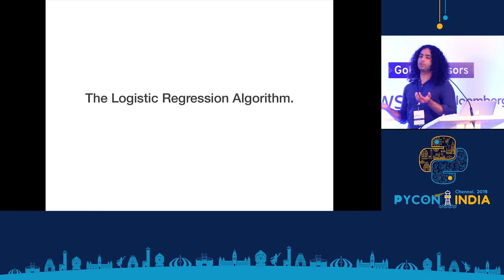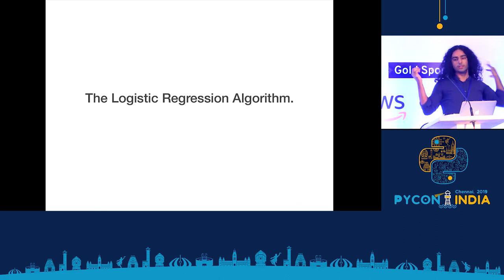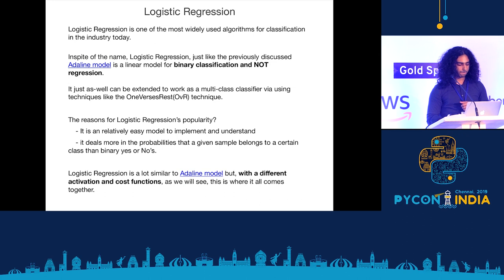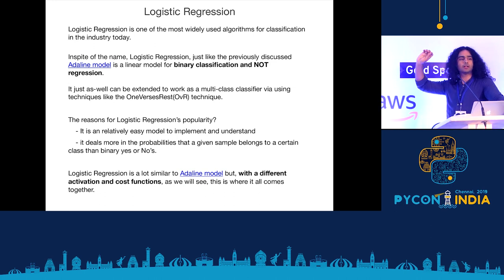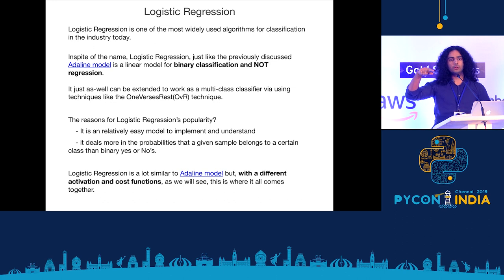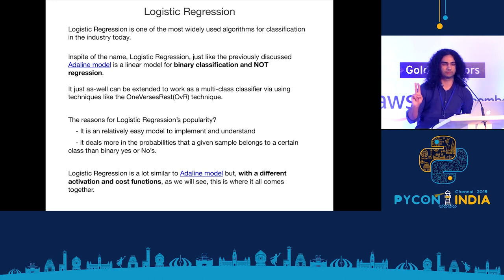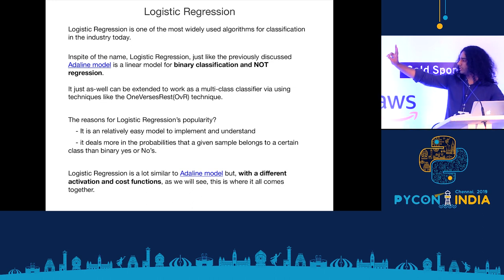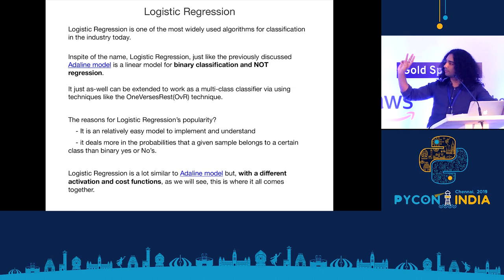Now we get to the ever so popular logistic regression model. Everything builds upon the previous thing — logistic regression also builds upon the concepts we've learned. In spite of the name, it's not a regression model; it's a classification model. Why is it so popular? First, it's easy to understand and implement. Second, it deals with the probabilities of a sample belonging to a certain class given certain features — not binary yes or no. When your weather channel says there's an 80% chance of rain, they're probably using logistic regression, among other things. It's similar to Adeline but with a different activation function and a different cost function.